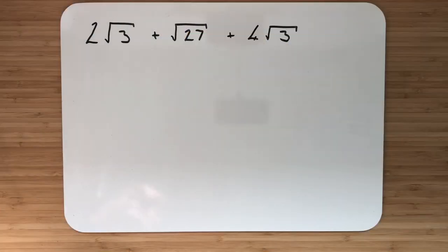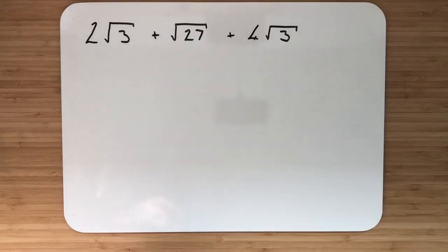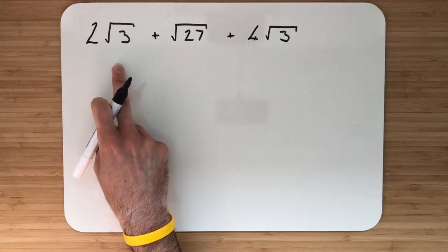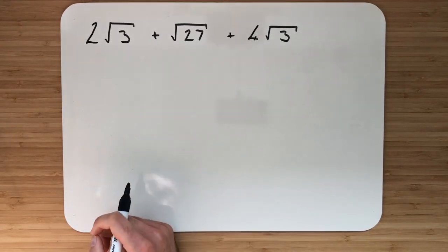In this example here it's very similar to what you'll see in an exam. You're looking to both simplify a surd down and then simplify the full entire calculation. The good thing with these questions is that you kind of get a step as a hint. So we have 2√3, add √27, add 4√3.